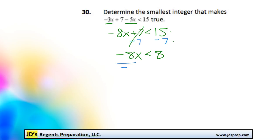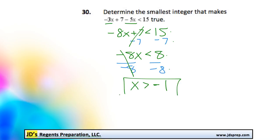Finally we would divide the inequality by negative 8. We need to remember that when we multiply or divide an inequality by a negative number, the inequality switches direction. So instead of being less than, it would be greater than. And 8 divided by negative 8 is negative 1. So our solution is that x has to be greater than negative 1.